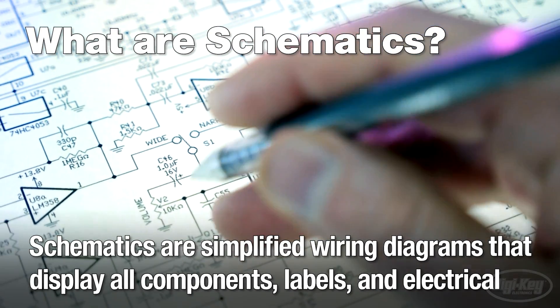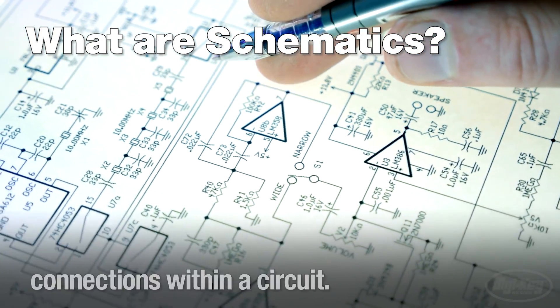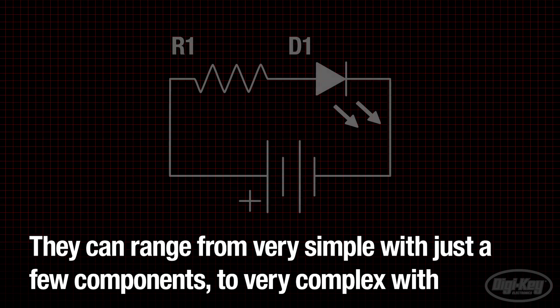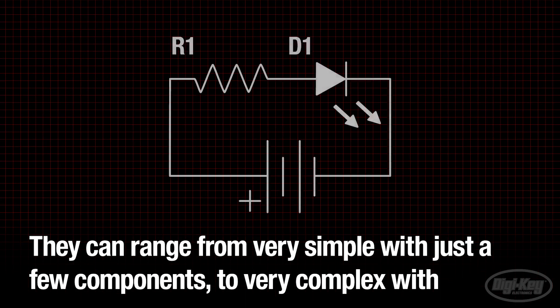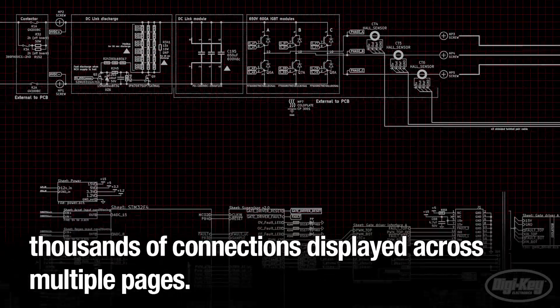Schematics are simplified wiring diagrams that display all components, labels, and electrical connections within a circuit. They can range from very simple with just a few components to very complex with thousands of connections displayed across multiple pages.